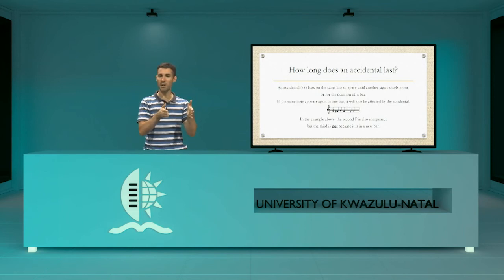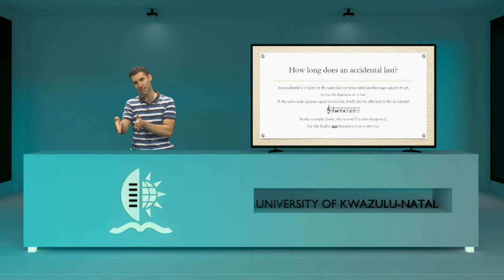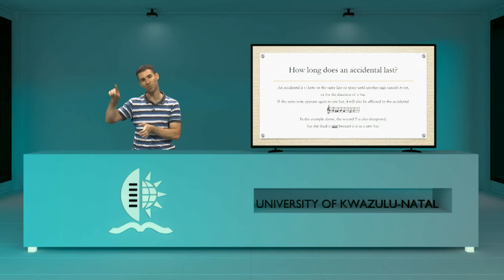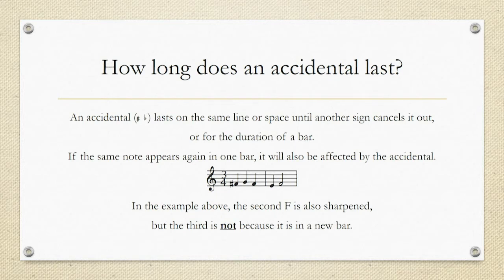Any F notes in the bar where the F sharp was written would be affected. But once the bar line has passed, if you want an F to be sharp in the new bar you have to redraw the sharp. So naming the notes in that example: it starts with F sharp, goes to G, back to F sharp because the sharp affects that same note within the bar, then we get the bar line, an E, and then a normal F — not an F sharp.